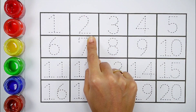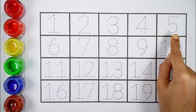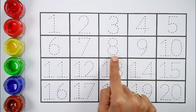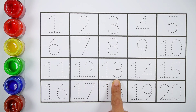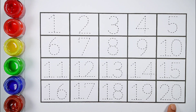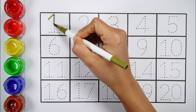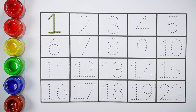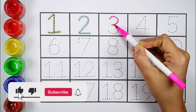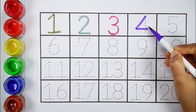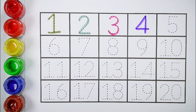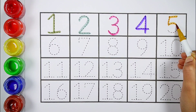1 2 3 4 5 6 7 8 9 10 11 12 13 14 15 16 17 18 19 20 21 22 23 24 25